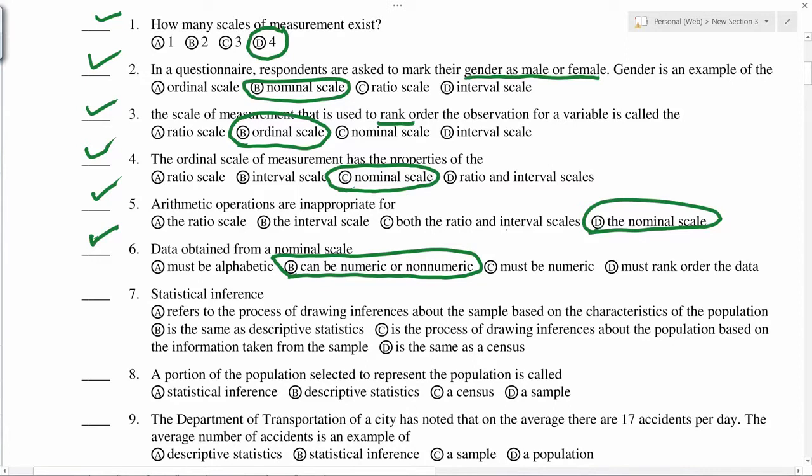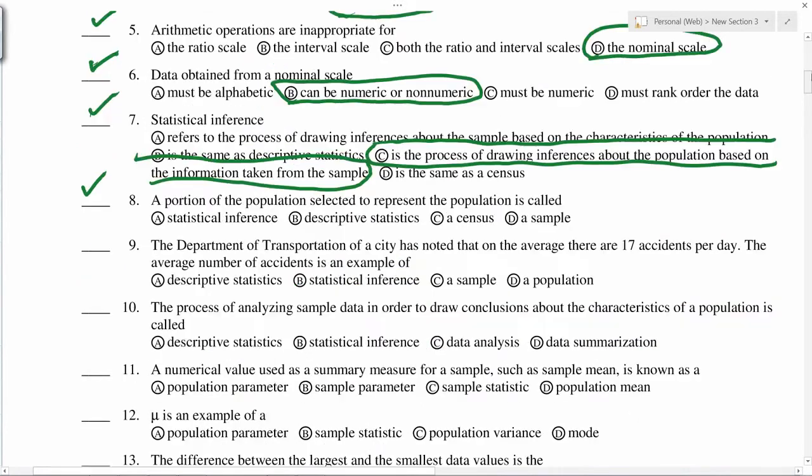Statistical inference is the process of drawing inferences about the population based on the information taken from the sample.